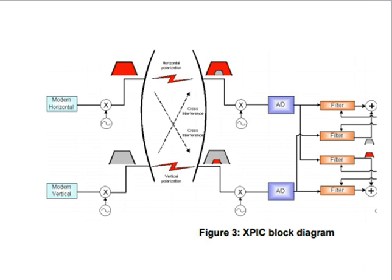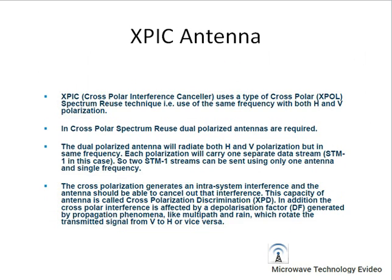Each polarization path — vertical and horizontal — receives a large signal of the opposite polarization, causing cross-polarization interference. The XPIC system filters this cross-polarization interference signal to receive the desired signal. In XPIC technology, each polarization path receives both the co-polar signal and the cross-polar signal. The receiver subtracts the cross-polar signal from the co-polar signal, cancelling the cross-polarization interference.